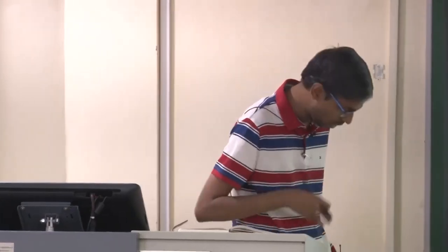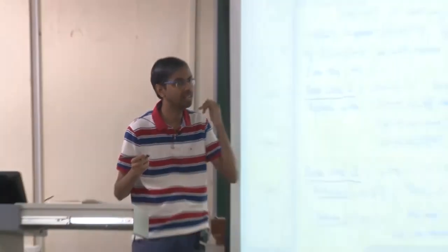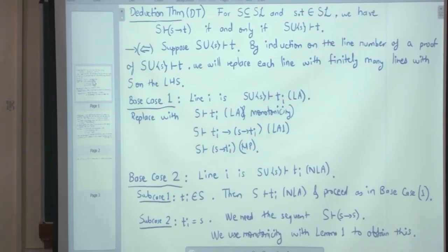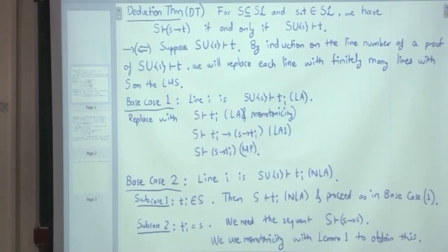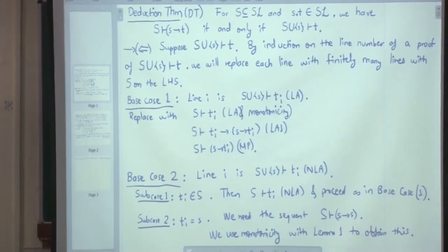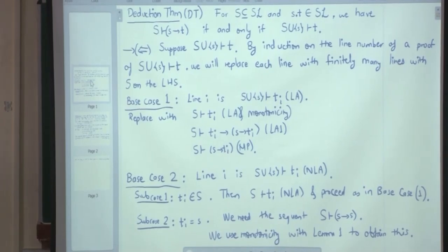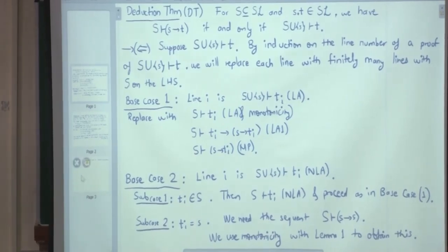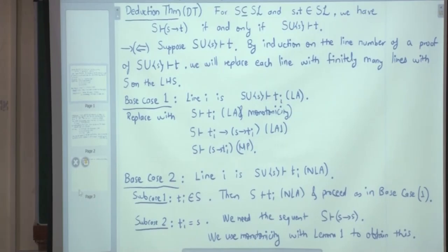By this point in the semantic part, we had defined valuation and proven an analog of DT for the semantic turnstile — the double turnstile. At that time we decided to define a theory. What was a theory? A satisfiable set.